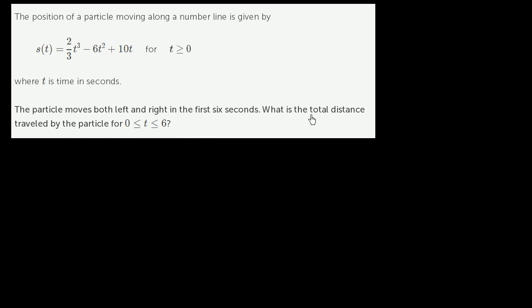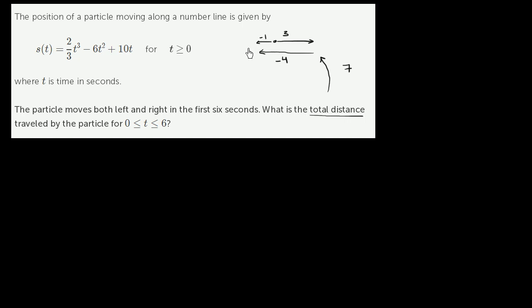Let's remind ourselves what is meant by total distance. If you start at a point, move three units to the right, and then four units to the left, your total distance is seven — three to the right and four to the left. Even though your position ends at negative one, meaning your displacement is negative one (you're one unit left of where you started), the total distance is seven.